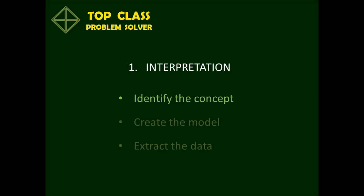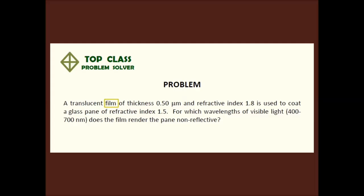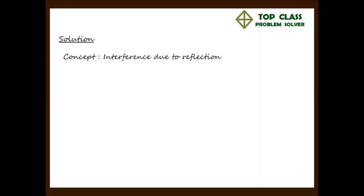The first step of the interpretation is to identify the concept embedded in the problem. The use of the word film here implies that this is a problem in interference due to reflection.